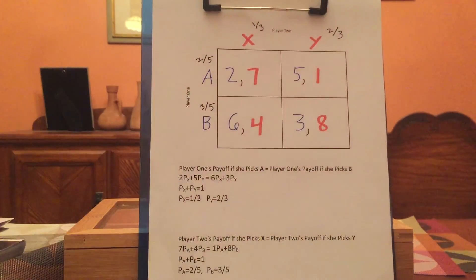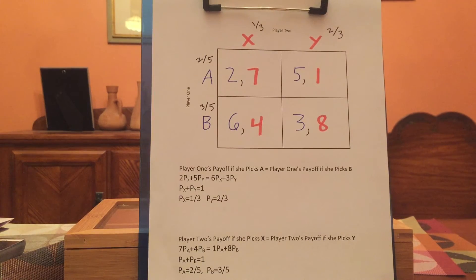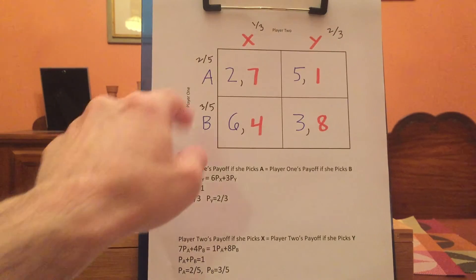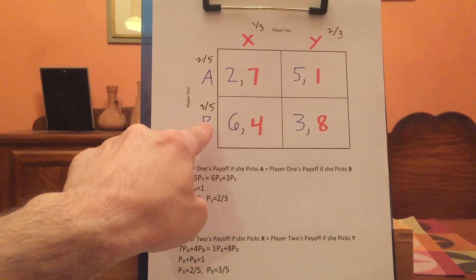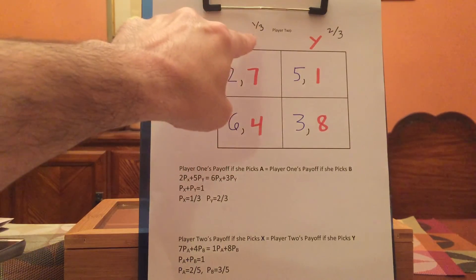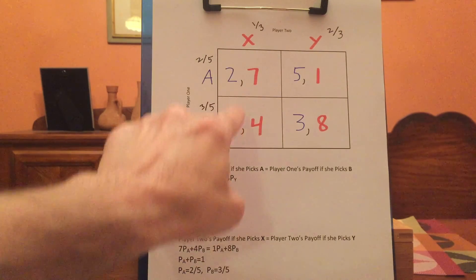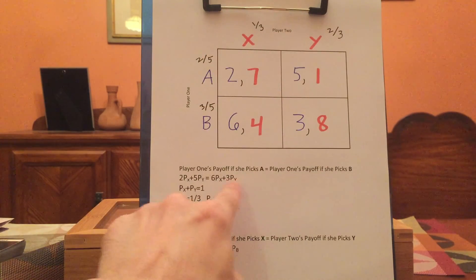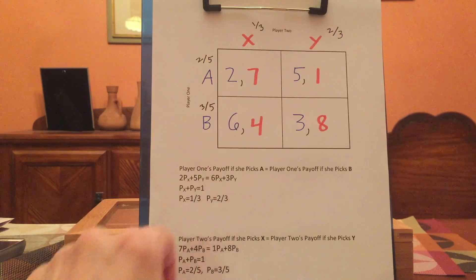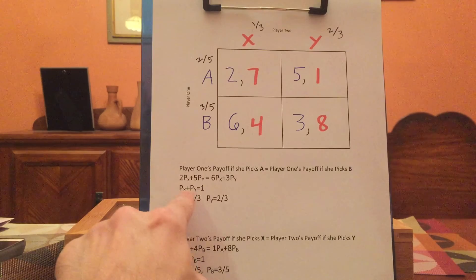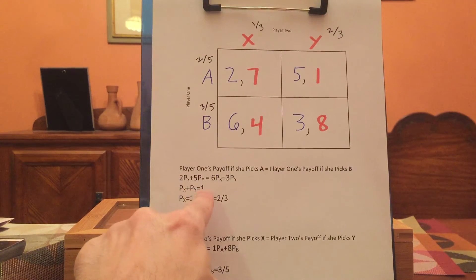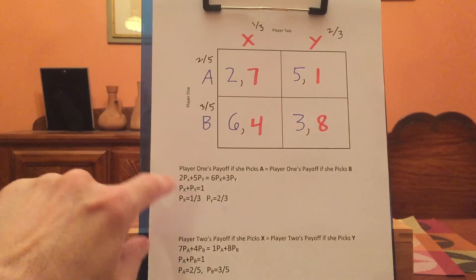For the final example in today's video, let's consider this game where I've written in the payoffs for both players. So player one is willing to mix — we set equal payoffs from A and B, and we also know the sum of the probabilities has to equal one, so p-sub-x plus p-sub-y has to equal one. Two equations, two unknowns — that's enough using simple algebra to solve.